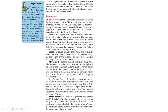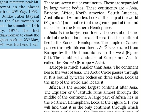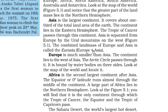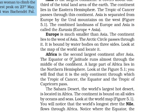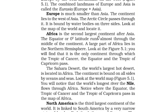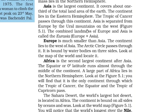Asia is the largest continent, covering about one-third of the total land area of the earth. It lies in the eastern hemisphere, and the Tropic of Cancer passes through it. Asia is separated from Europe by the Ural Mountains to the west, and the combined landmass of Europe and Asia is called Eurasia. Europe is much smaller than Asia, lies to the west of Asia, and is bound by water on three sides.